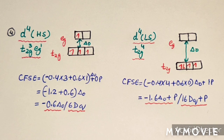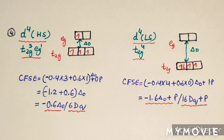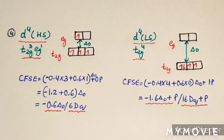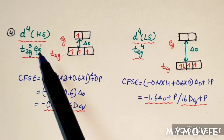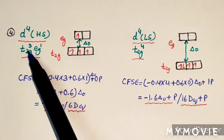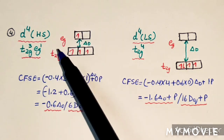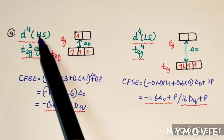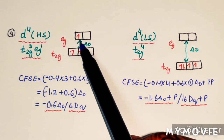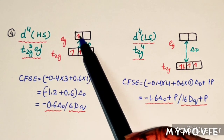Now there are four interesting configurations: D4, D5, D6, and D7. For these configurations, electron filling is different for high spin and low spin complexes, so their CFSE values will be different. The high spin and low spin complexes of D4, D5, D6, and D7 show different crystal field stabilization energies.